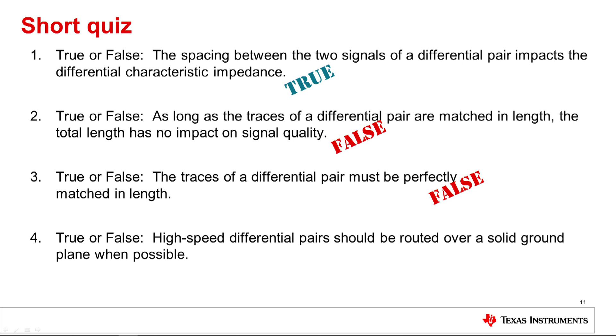True or false: high-speed differential pairs should be routed over a solid ground plane when possible. True, routing priority should be given to the high-speed signal traces, placing them on the top layer above the solid ground plane, or when necessary on the bottom layer taking care not to route at right angles over power plane splits.